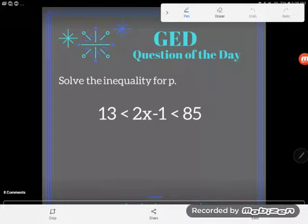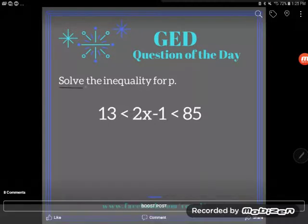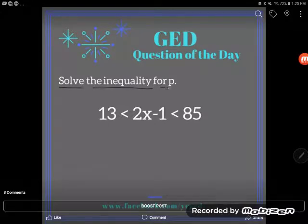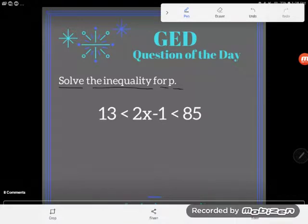Hey guys, it's GED question of the daytime, and it looks like we've been told to solve the inequality, and it says for P. But as one of my students pointed out to me, there's no P in this inequality, so I think there's a typo here.